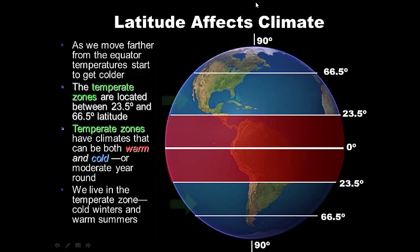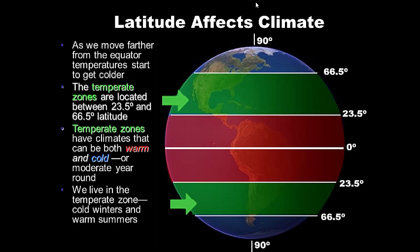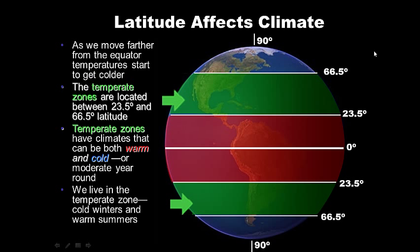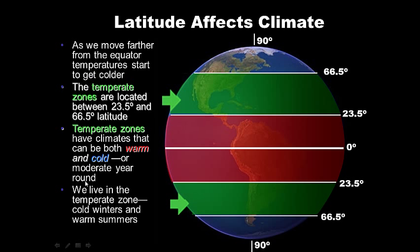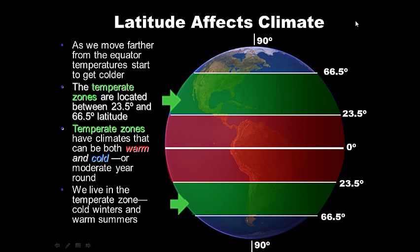As you move farther from the equator, temperatures get colder and we encounter the temperate zone, located between 23.5 and 66.5 degrees latitude. Temperate zones have climates that are both warm and cold — basically moderate year-round. We live in the temperate zone here in California. Temperate zones have cold winters and warm summers; they experience the full four seasons.